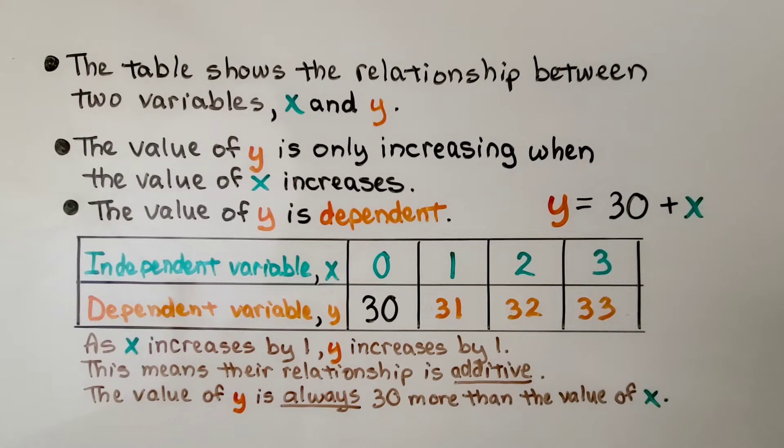The table shows the relationship between two variables, x and y. The value of y is only increasing when the value of x increases. The value of y is dependent. It's dependent on x.